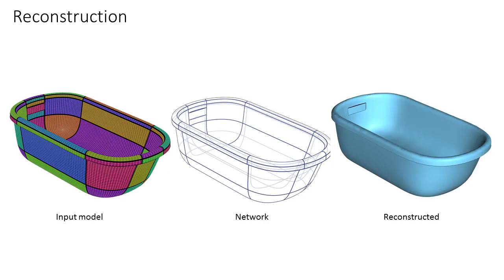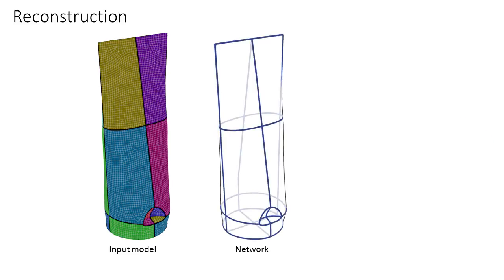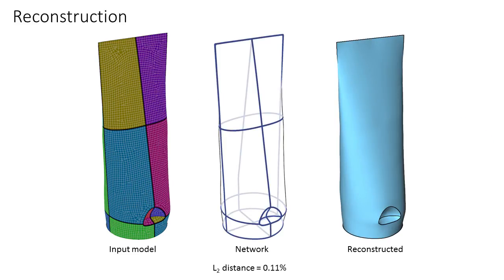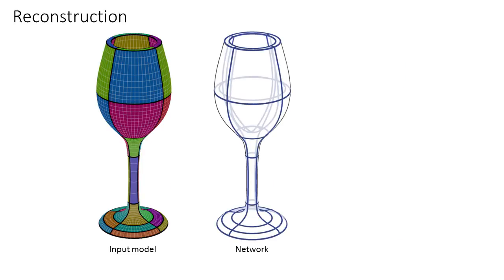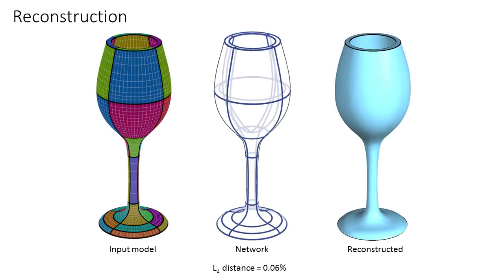Our networks accurately describe the input models enabling accurate reconstruction from input curves alone. On all of these examples, the distance between the input and reconstructed models is less than 0.3% of the bounding box diagonal.